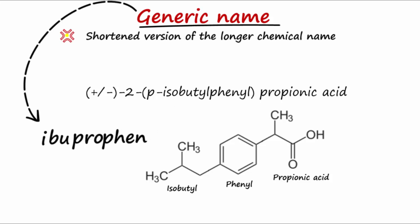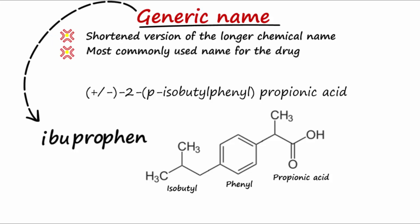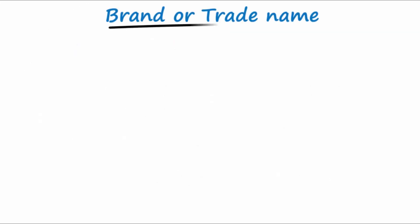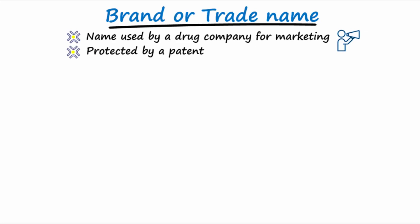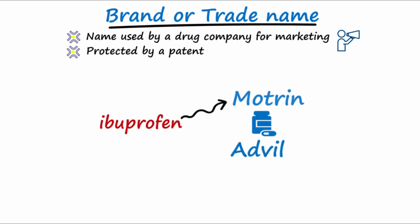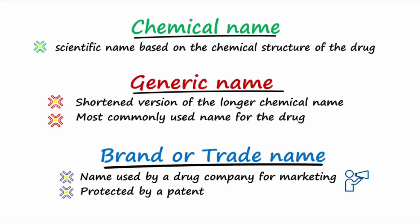The generic name is the most commonly used drug name. The brand or trade name is the name used by the manufacturer of the drug to market the drug and is protected by a patent. The names Motrin and Advil are brand names for the generic name ibuprofen. Here's a summary of the differences between the chemical, generic, and brand or trade names.